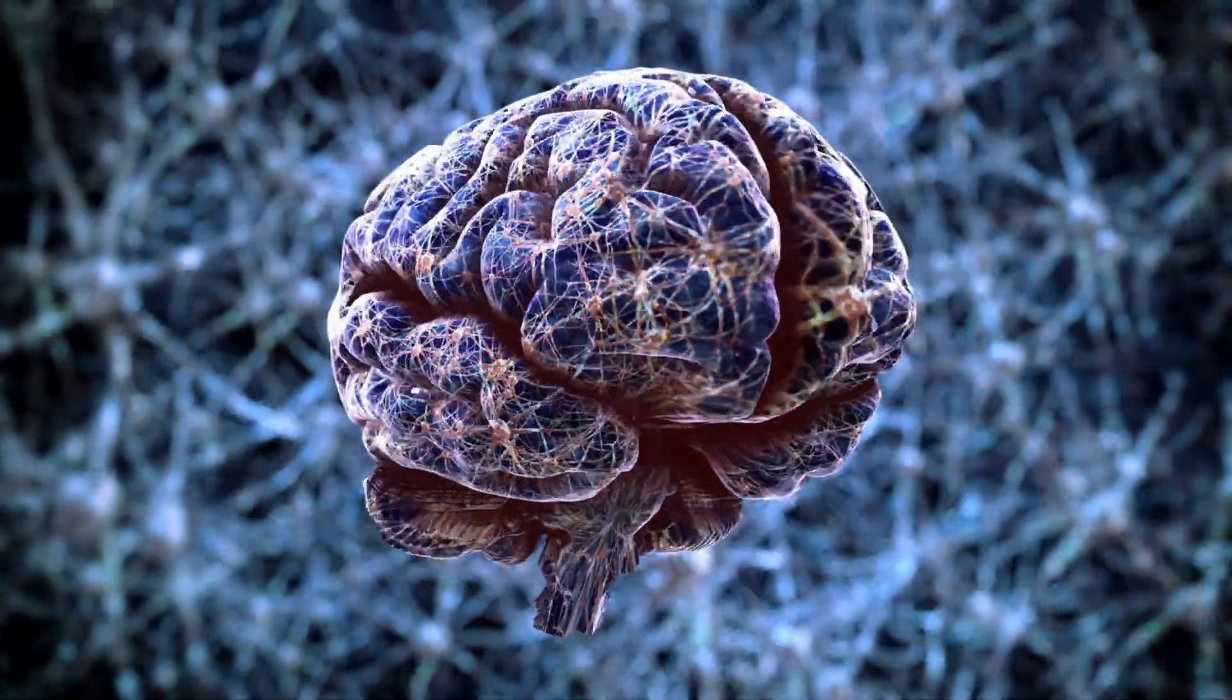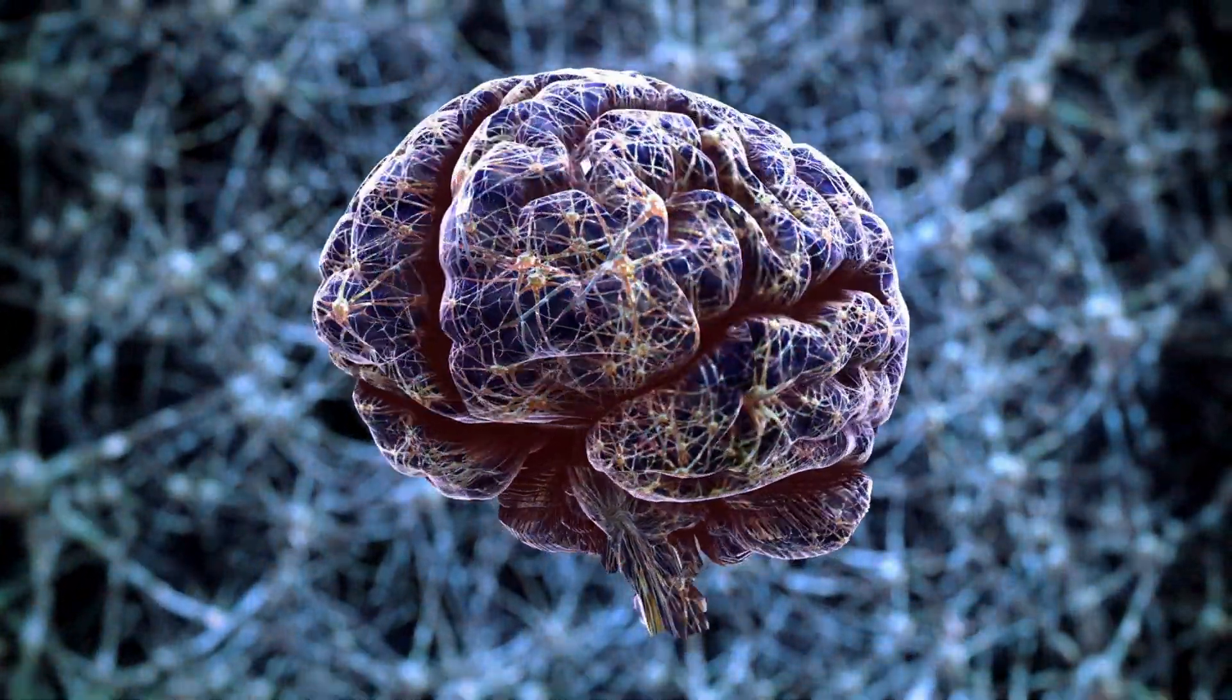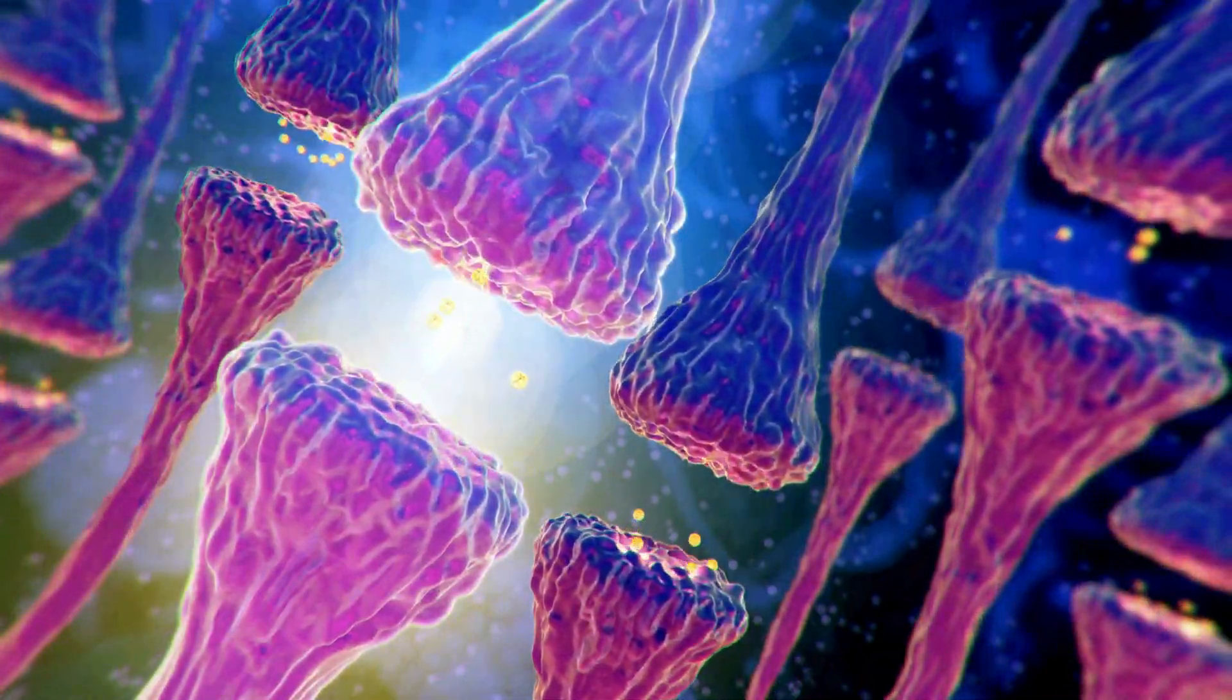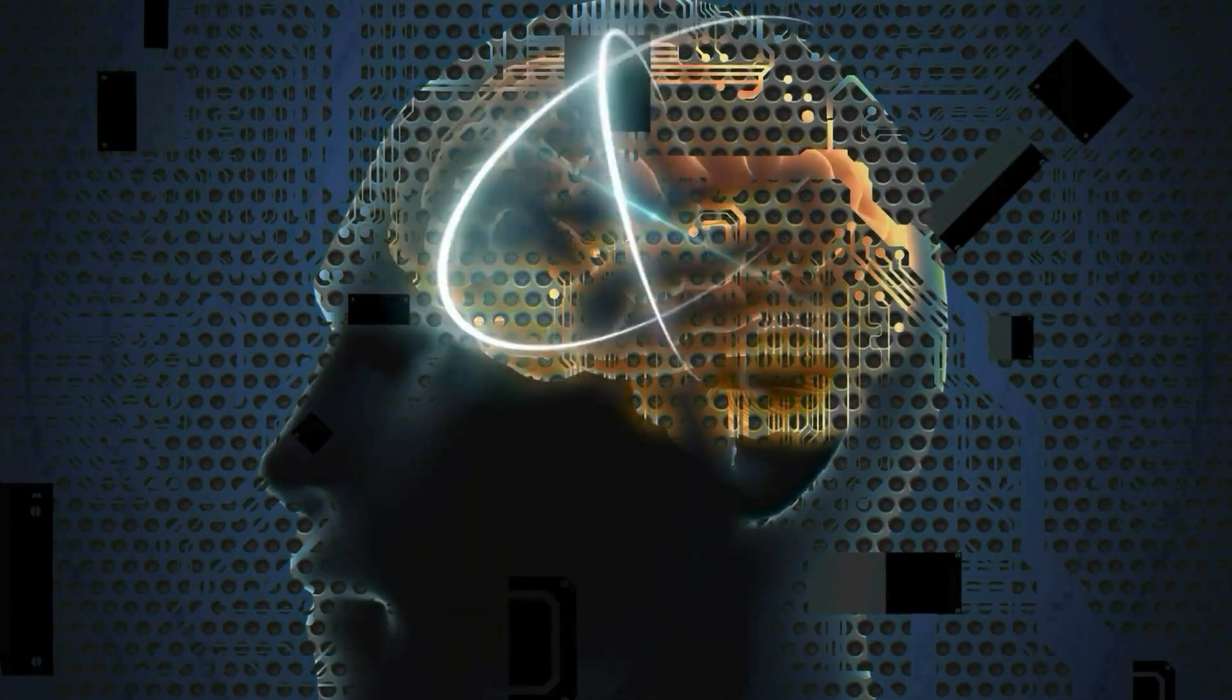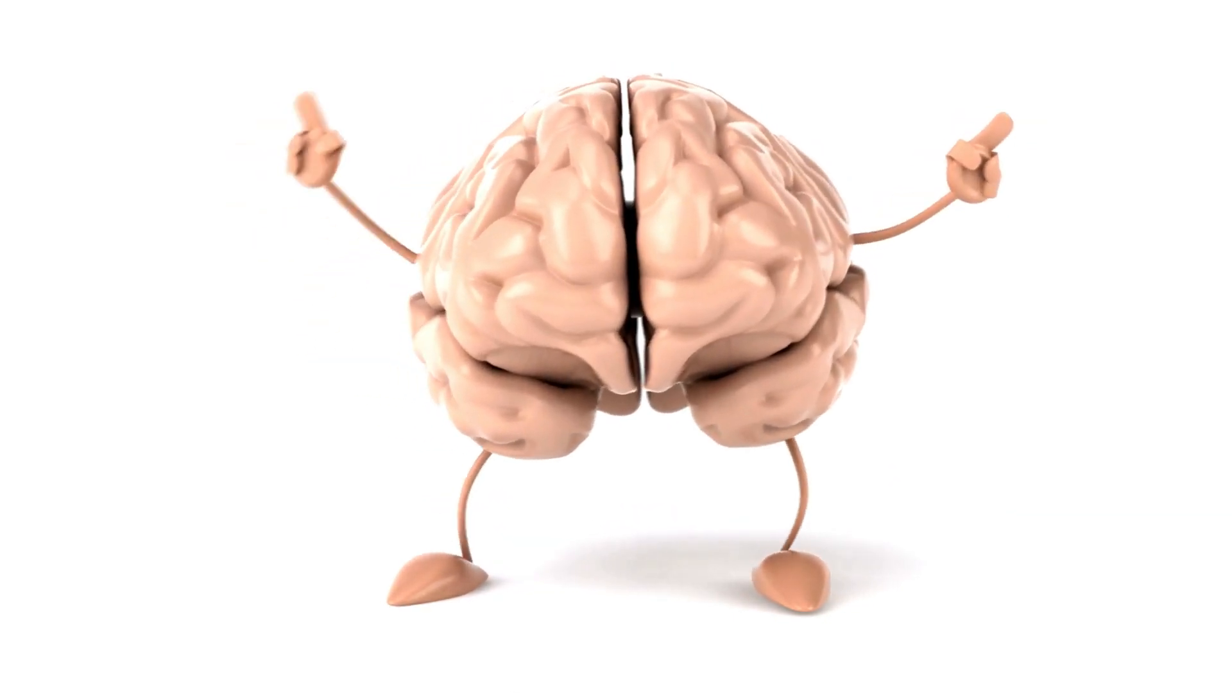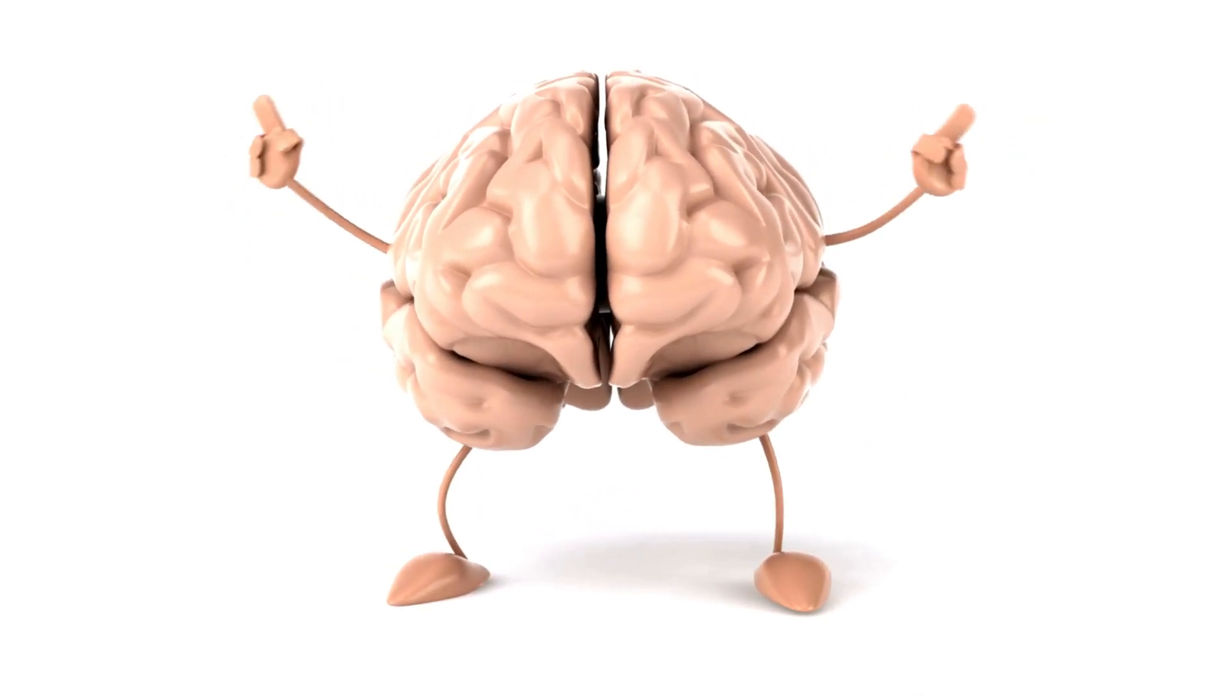The human brain is a marvel of complexity, comprising approximately 86 billion neurons interconnected by trillions of synapses. This intricate organ not only controls our bodily functions but also plays a pivotal role in shaping our attitudes and determining our perception of right and wrong.